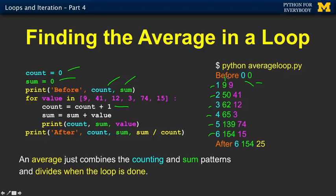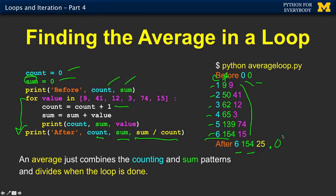So this is the running total. This is the count. Actually that's the sum variable in this case, and this is the thing we were reading in. We finally get done because there were only six things — the for loop dumps us out. How many did we get? We got six. What was the total? It was 154. Then divide sum by count, and that should be 25.0. So we divide sum by count and now we have calculated the average.